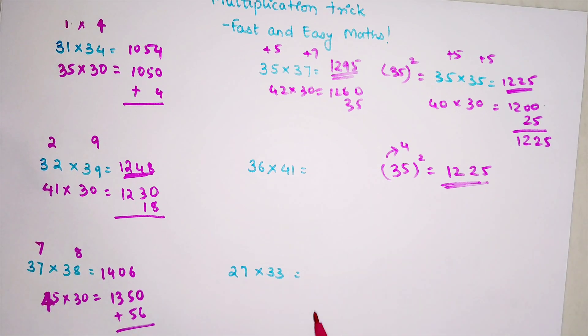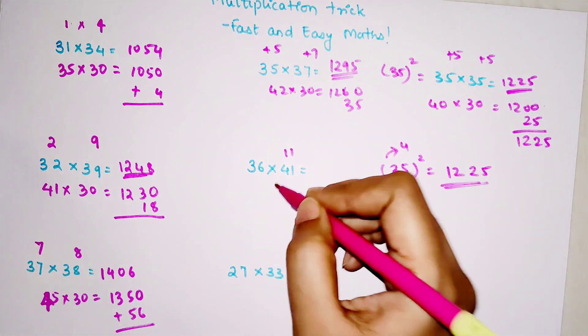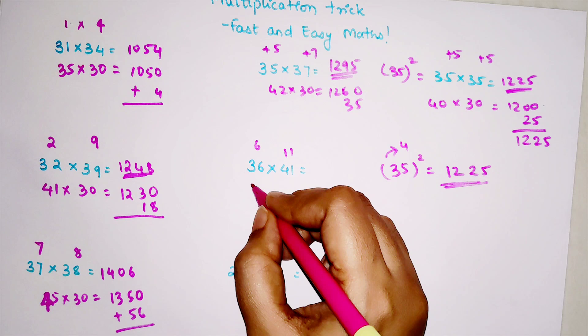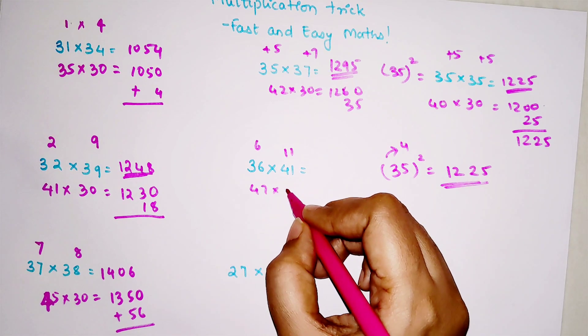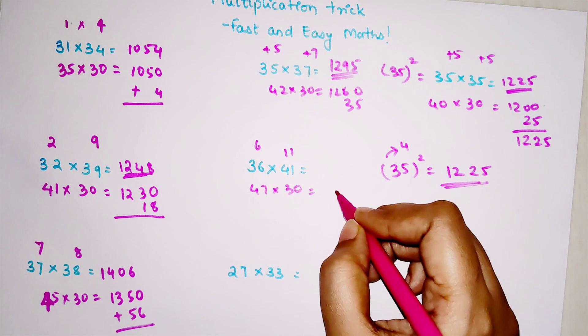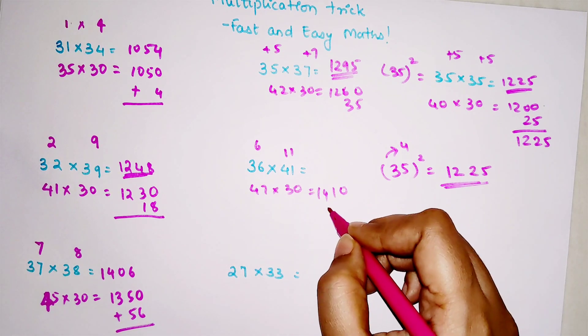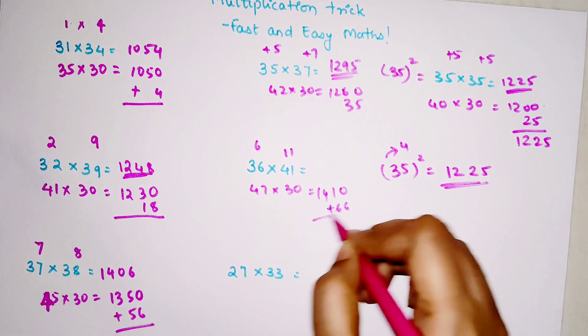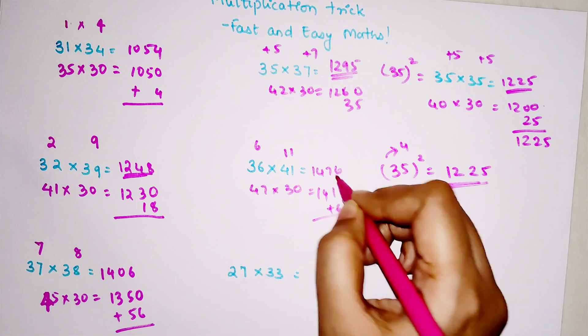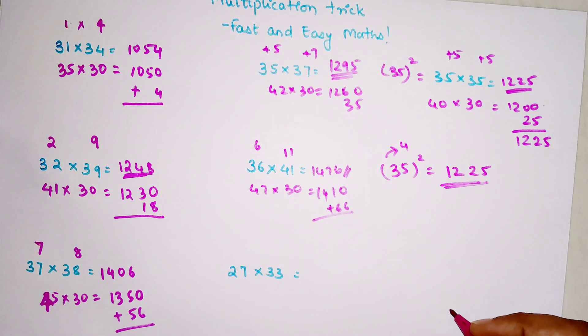Now let's try doing that with 41×36. This is plus 11, this is plus 6. When you add this, we have 47 into 30. Your answer is 1410 plus 66. So final answer is 1476.